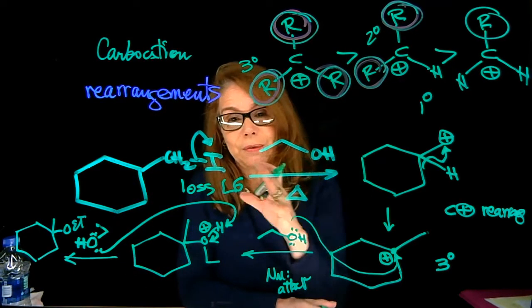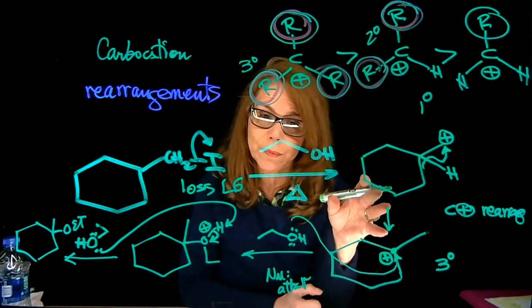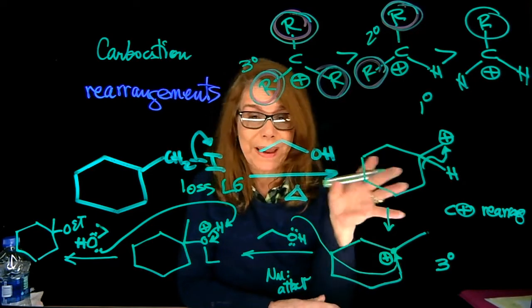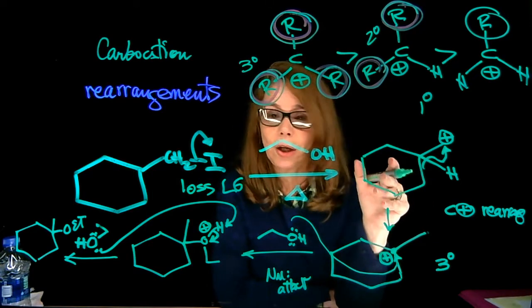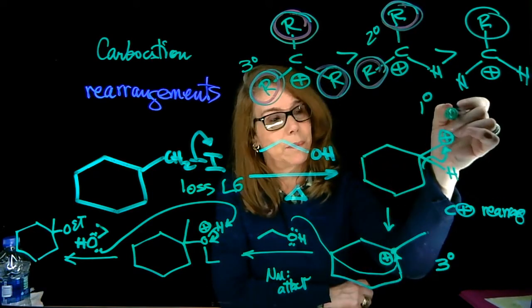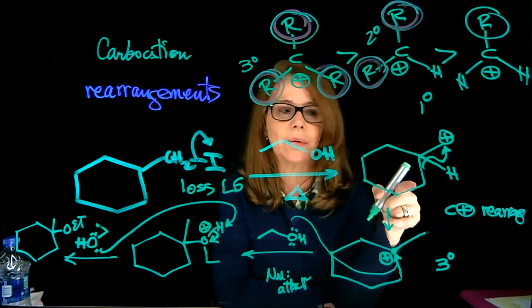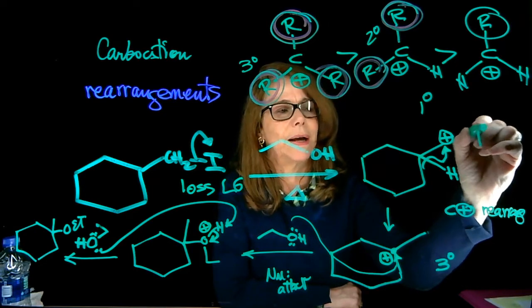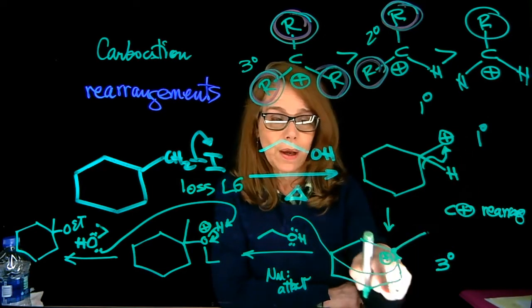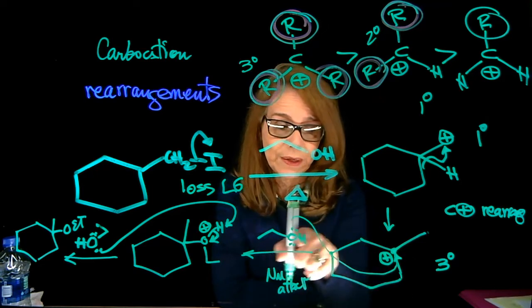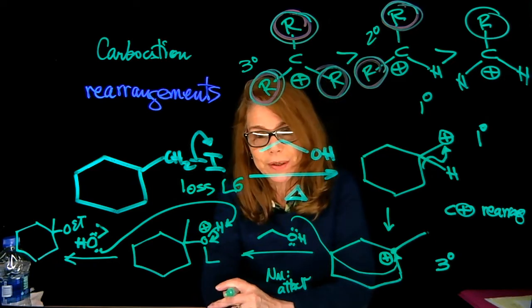But why do we do that? Because we will have reactions in which a carbocation is formed, the major product depends on the type of carbocation. In this case, the major product is not the one from nucleophilic attack over the primary carbocation, because that's not very stable. The major product comes from nucleophilic attack over a tertiary carbocation after rearrangement.